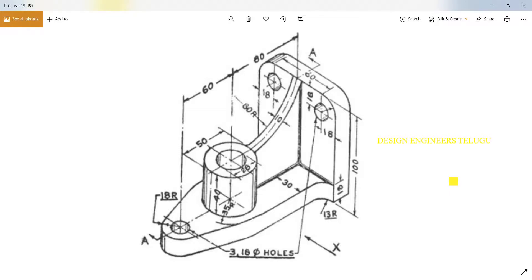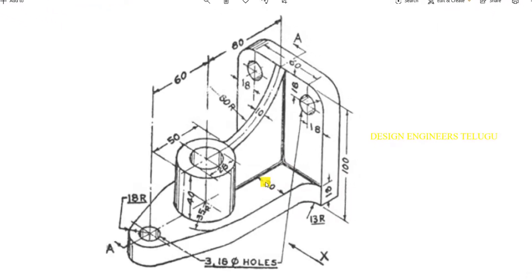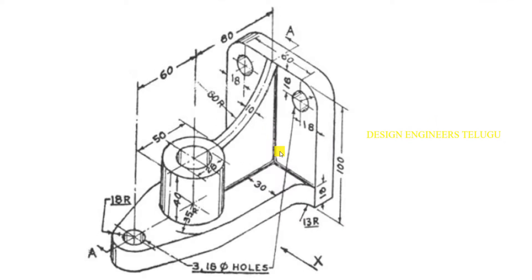Hi all, welcome to Design Engineers Telugu. In this class I will explain how to make this object. Before going to create this object we need to know how many operations we require. To create this object we need four operations: the base, the stiffener, and the hollow cylinder. Then we need some holes, fillets and all — that is secondary.